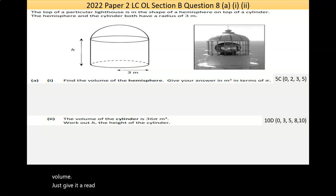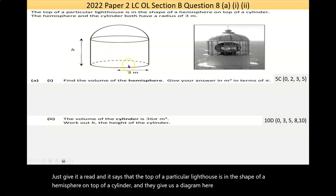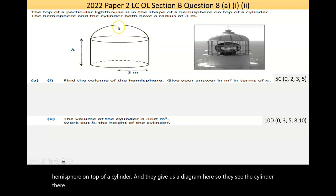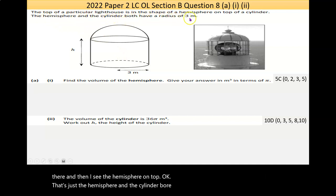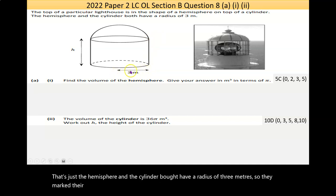The top of a particular lighthouse is in the shape of a hemisphere on top of a cylinder. They give us a diagram here so I see the cylinder there, and then I see the hemisphere on top. The hemisphere and the cylinder both have a radius of 3 meters. So they mark that 3 meters in the bottom. It's the radius of the cylinder, and therefore it'll be the radius of the circle up here.